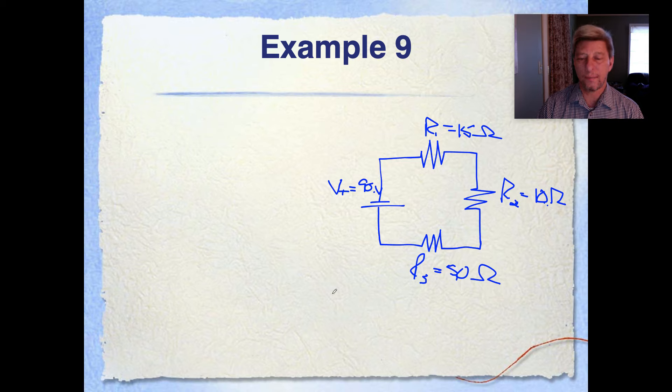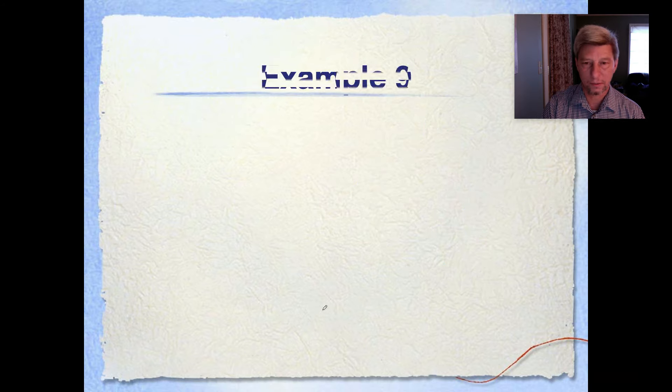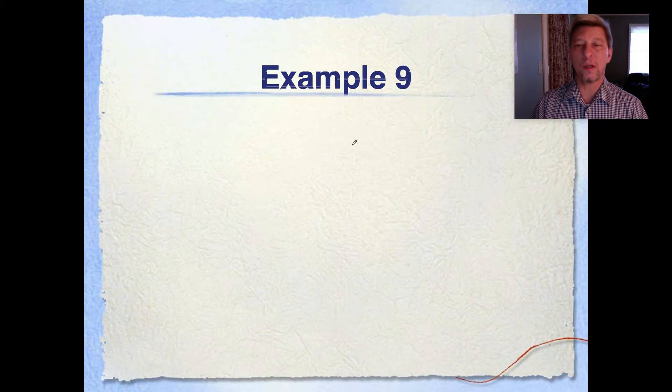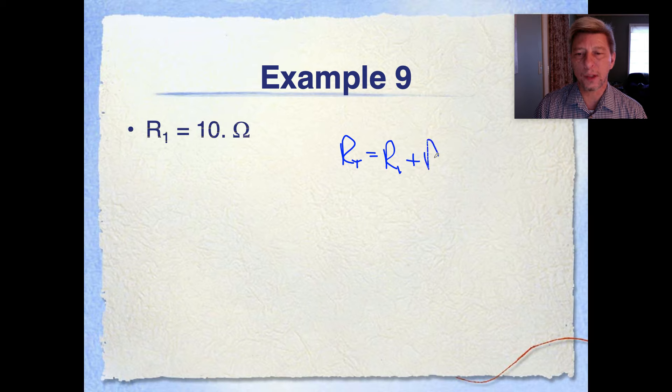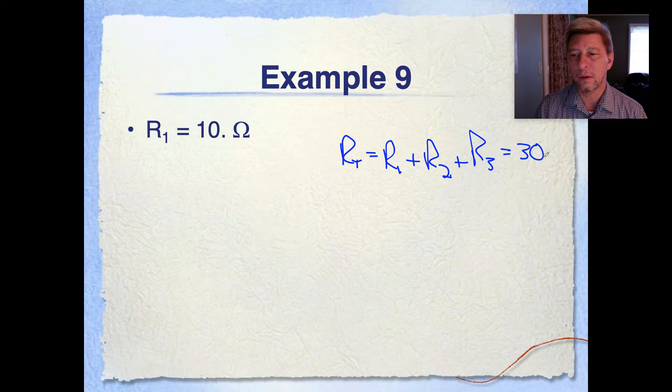But then I can use ohms law to calculate the value of the total voltage. Voltage is going to equal the first current. I don't know if I actually went to the next slide or not. So in this case, the first question I was asked was, what is the total resistance? So R1 plus R2 plus R3. And that's going to give me a grand total of 30 ohms.